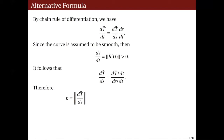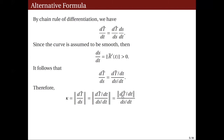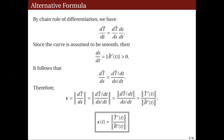Using the definition of curvature as the norm of dT/dS, and replacing using the chain rule expression, dS/dt is a scalar quantity always greater than zero, so we can place it outside the norm. Replacing the derivative of the unit tangent vector with respect to T by the notation T'(t), and replacing dS/dt by the norm of R'(t), we get the alternative formula: kappa(t) equals the norm of T'(t) over the norm of R'(t), regardless of the interpretation of the parameter.